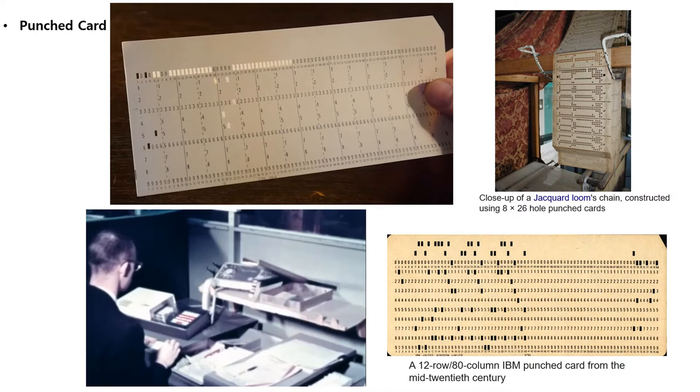The Jacquard head used replaceable punch cards to control a sequence of operations to develop a pattern on the fabric. It is considered an important step in the history of computing hardware. The ability to change the pattern of the loom's weave by simply changing cards was an important conceptual precursor to the development of computer programming and data entry. Charles Babbage knew of Jacquard's machine and planned to use cards to store programs in his analytical engine. In the late 19th century, Herman Hollerith took the idea of using punch cards to store information a step further when he created a punch card tabulating machine, which he used to input data for the 1890 U.S. Census.